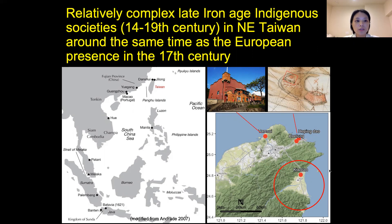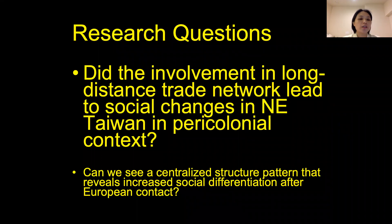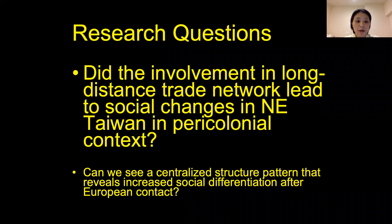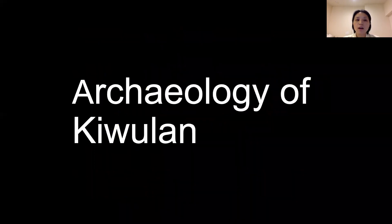Archaeological evidence reveals high density of population, long-distance trades, and the use of foreign prestige goods in burial contexts, suggesting some level of social differentiation. I'm curious about whether the emergence of social differentiation resulted from European colonization in northern Taiwan. This indirect impact could happen at the periphery of colonial centers, identified as pericolonial effects by Acabado, according to his research in the northern Philippines. My main research question is: did involvement in long-distance trade networks lead to social changes in northeastern Taiwan in a pericolonial context? Can we identify changes from burials, and can we see a centralized structure pattern that reveals increased social differentiation after European contact?